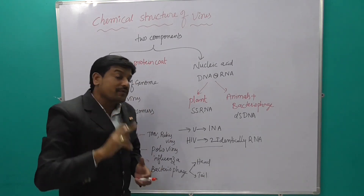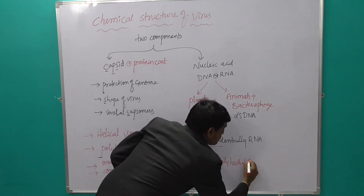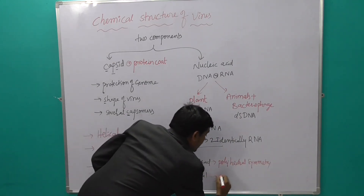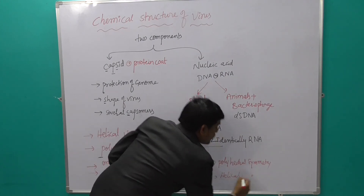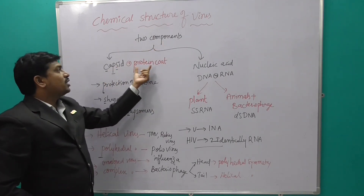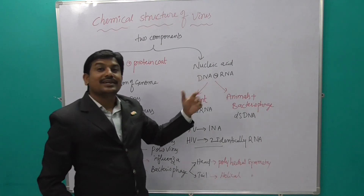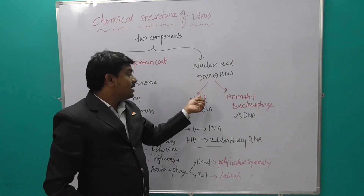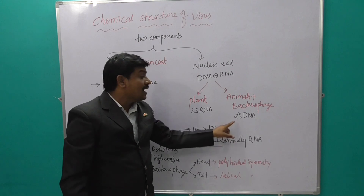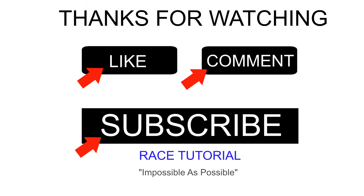The head of bacteriophage has polyhedral symmetry, and the tail has helical symmetry. In summary, the virus has two components: capsid and nucleic acid. The capsid, also called protein coat, serves protection and shape purposes. The virus which infects plants has single-stranded RNA; the virus which infects animals has double-stranded DNA; and HIV has two identical RNAs.